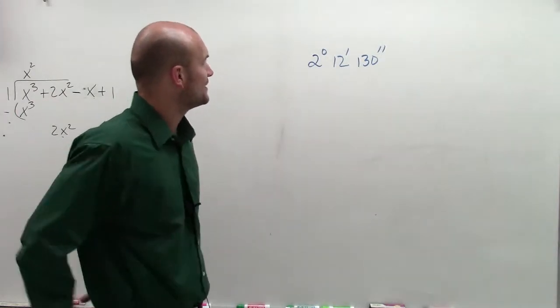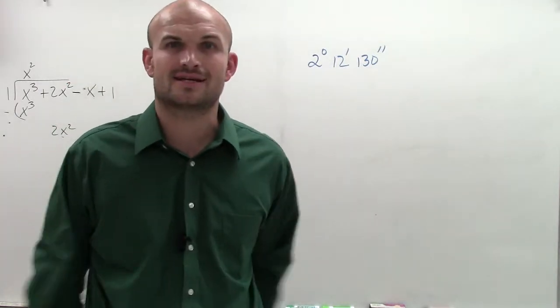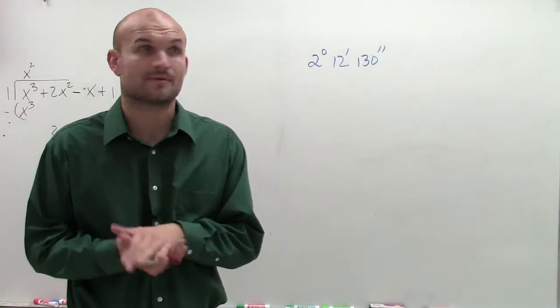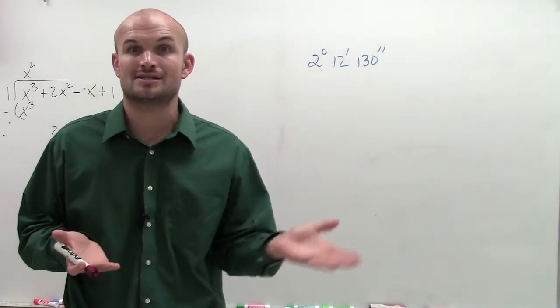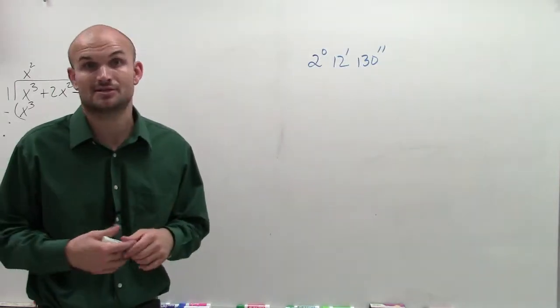So what I have here is 2 degrees, 12 minutes, 130 seconds. So what exactly are your minutes and your seconds and your degrees? Well, remember, degrees is going to be our unit of measurement that we're going to use to measure our angle. And remember, there's 360 degrees in a full revolution as you can represent as a circle.